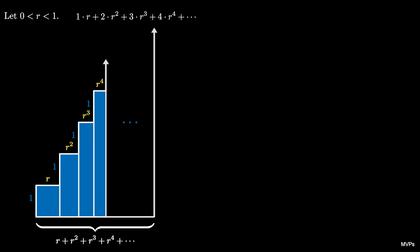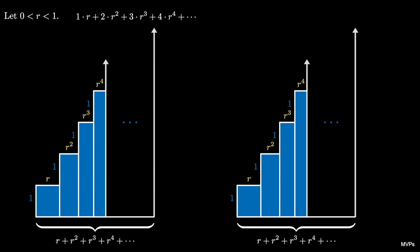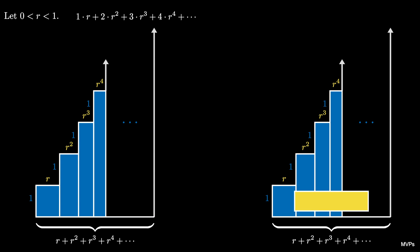We can also decompose the staircase into rows of rectangles. The first such rectangle has height 1 and the width is the sum of the geometric series with ratio r and first term r which converges to r over 1 minus r so the area enclosed is r over 1 minus r.